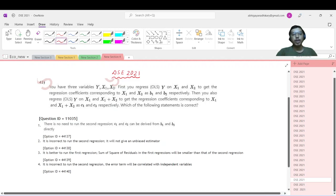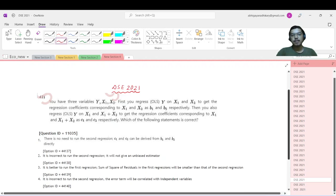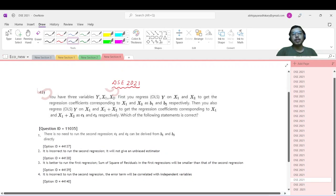Hello everyone, welcoming you to Shorups' classes. Today we are looking at DAC 2021 paper question number 43.